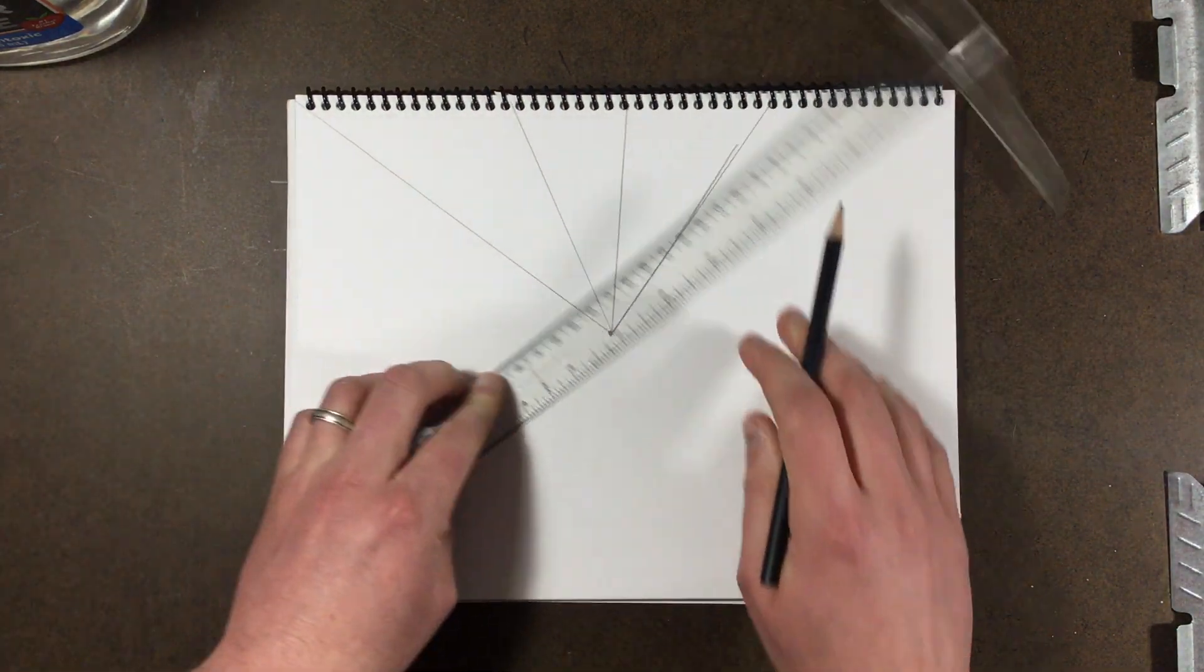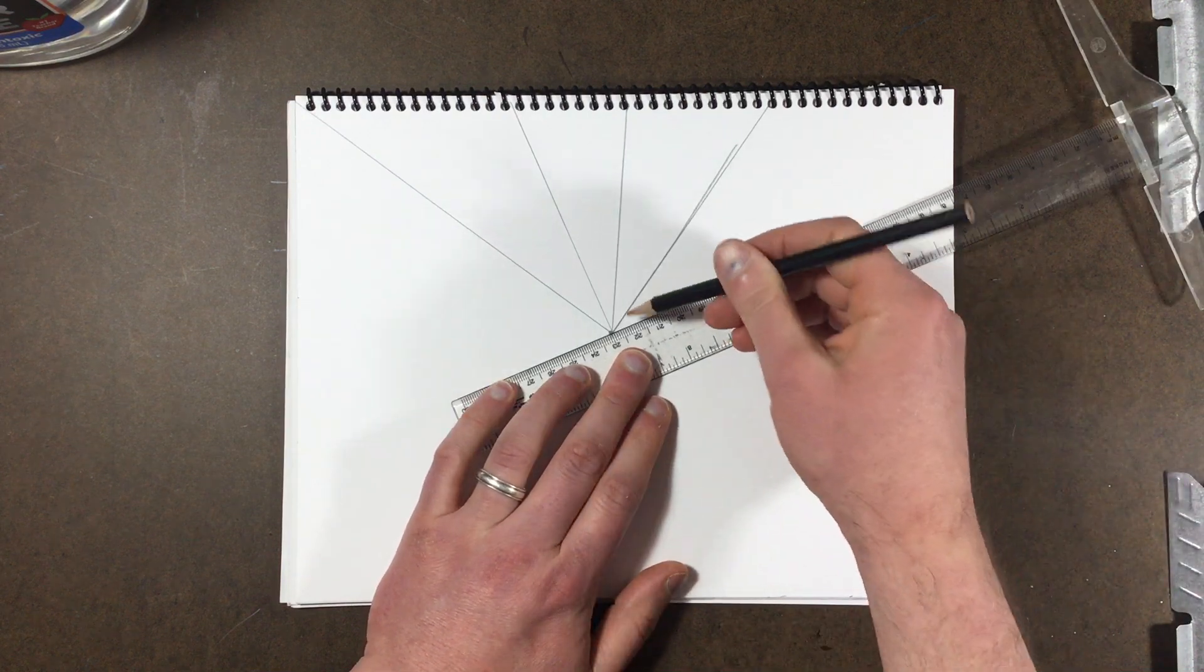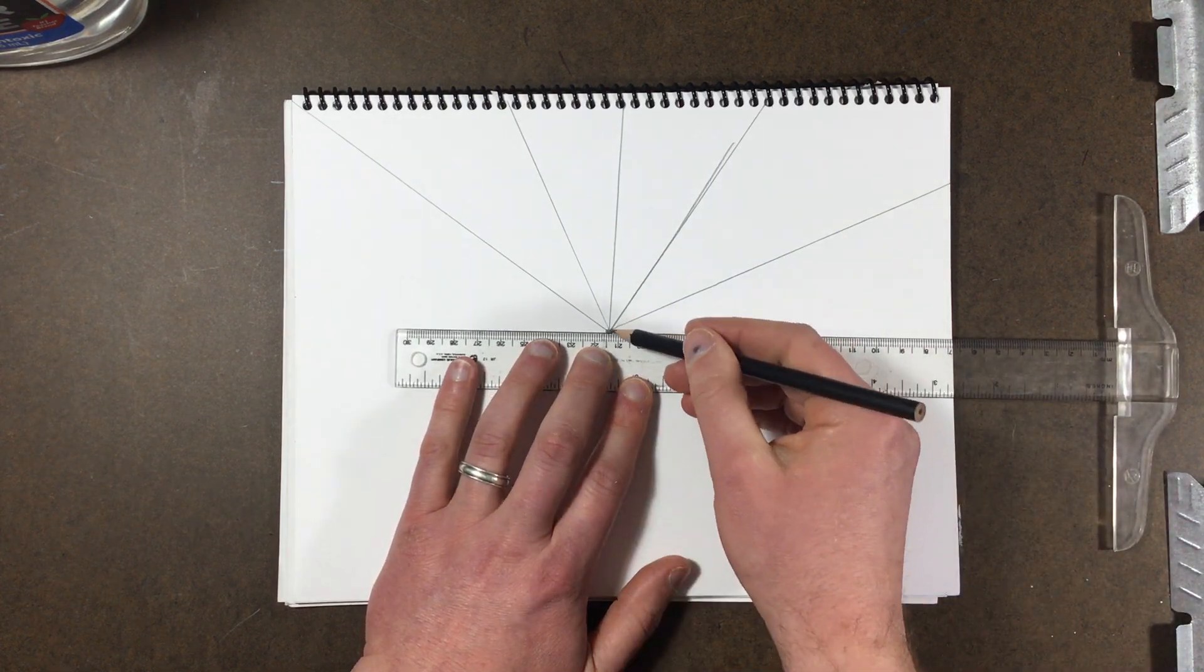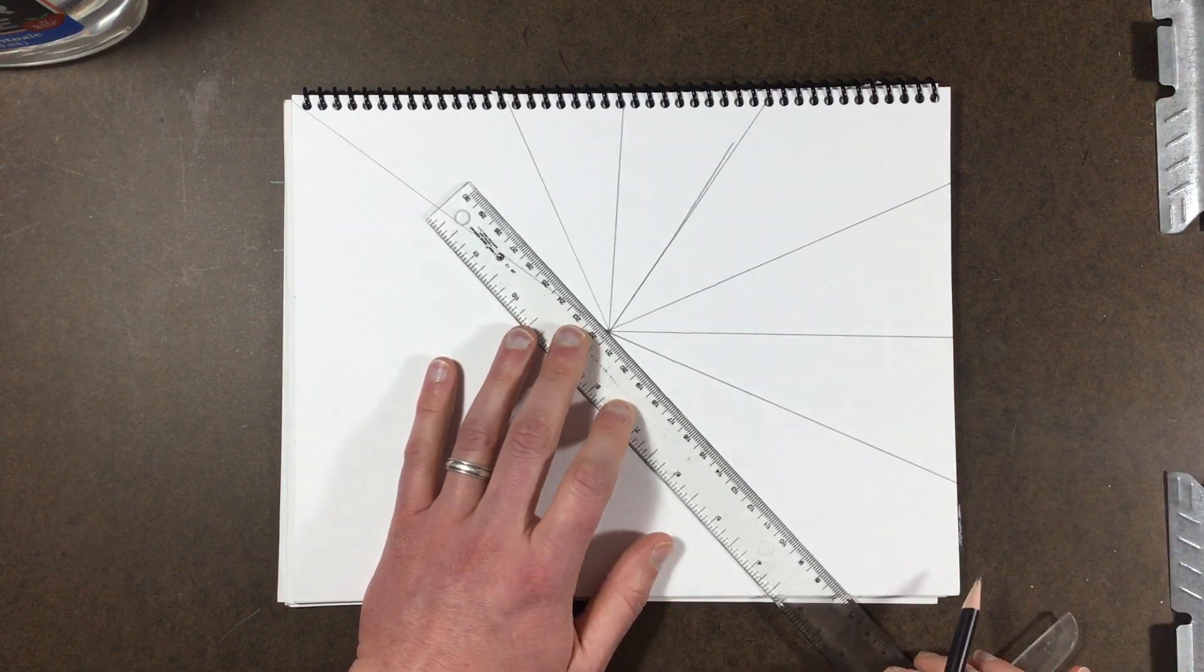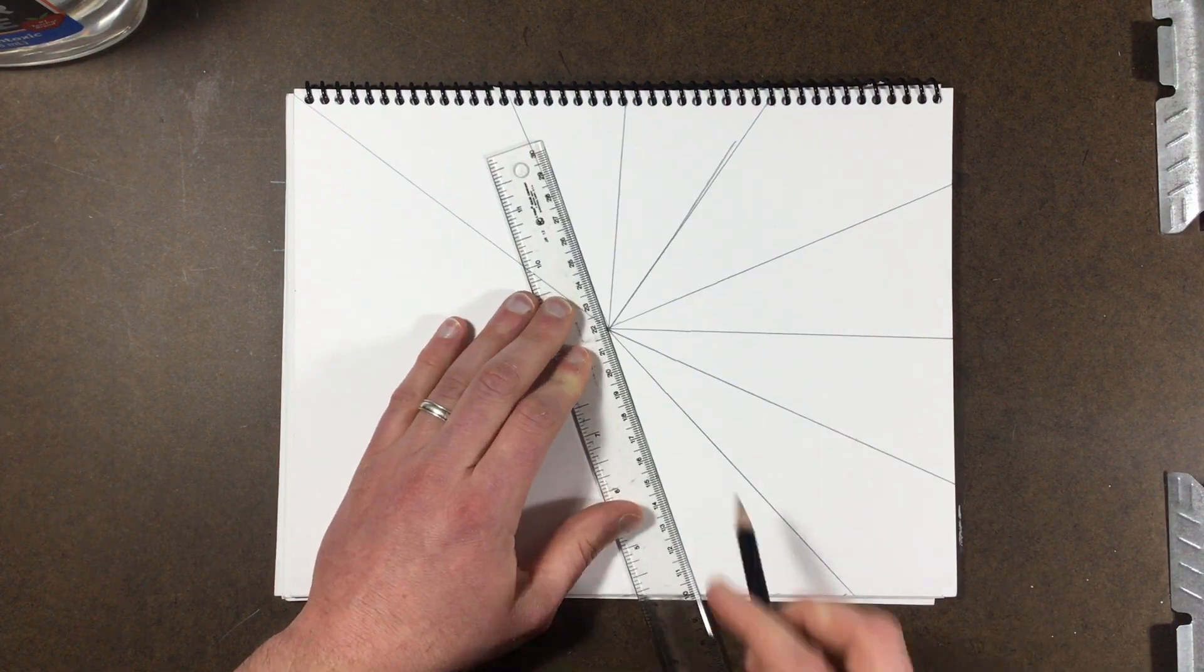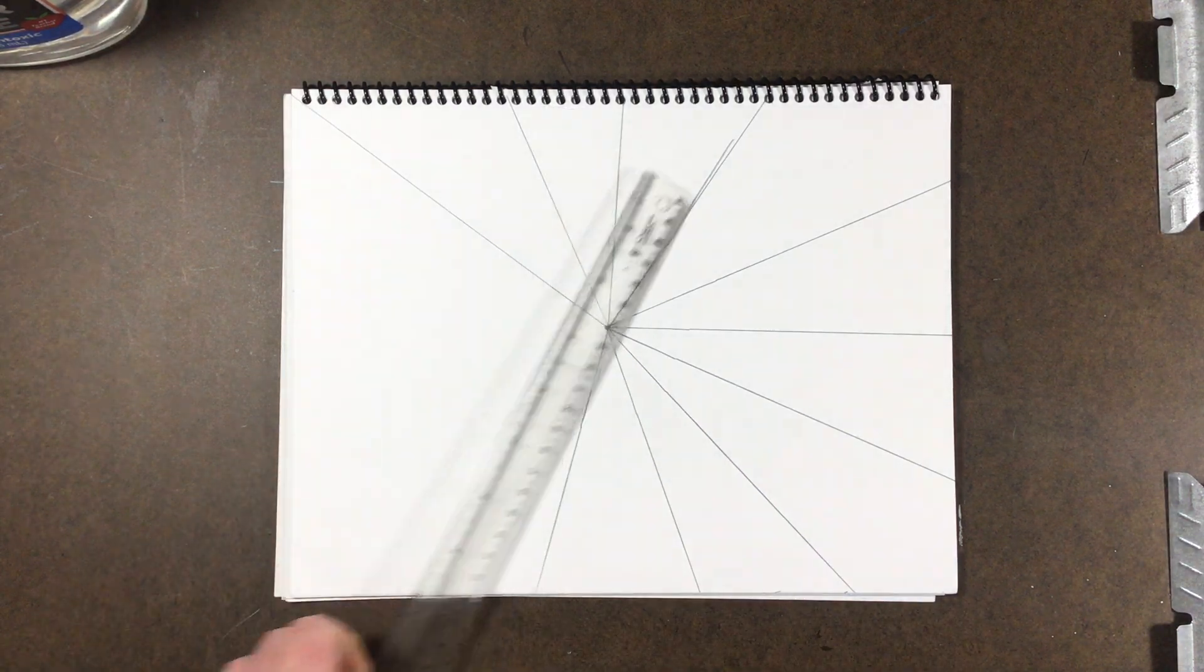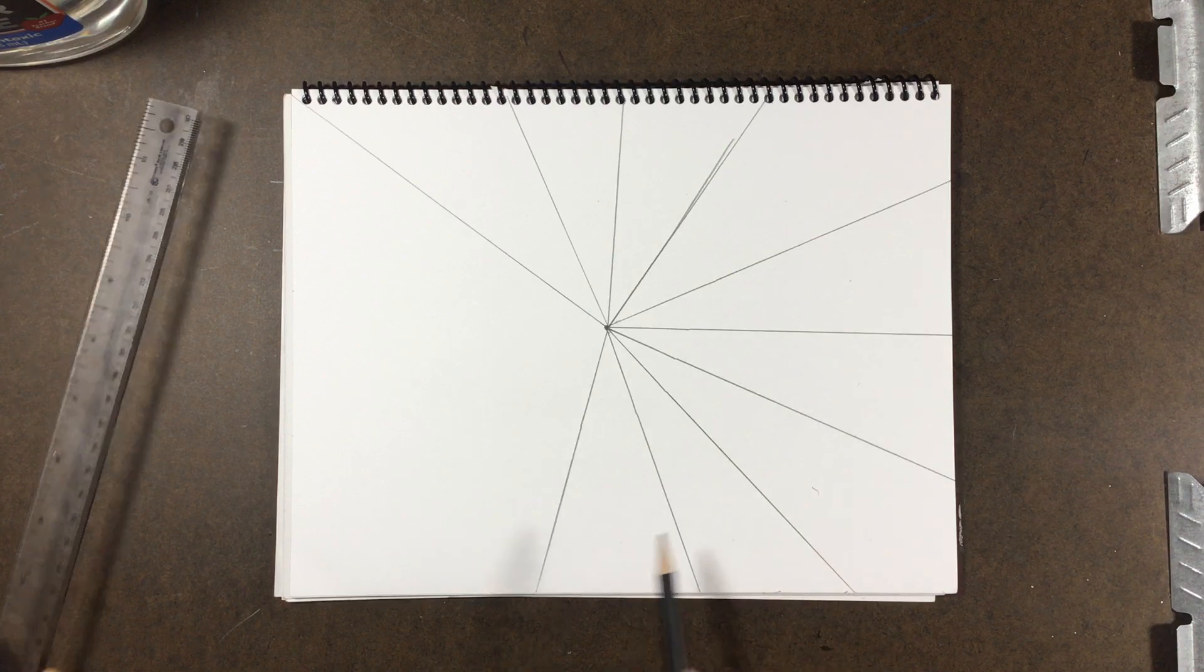You can make some of them larger, some of them skinnier, whatever you want to do, but ultimately we want an even amount by the time we go all the way around. Towards the end you're going to see me start counting just to make sure that I have enough. So we've got one, two, three, four, five, six, seven, eight, nine so far.